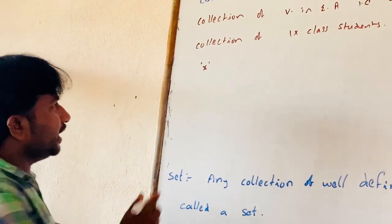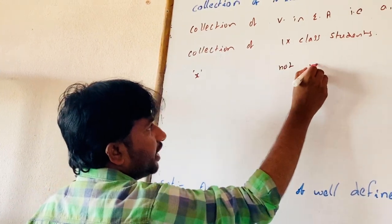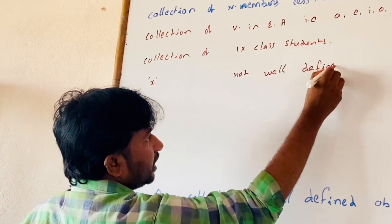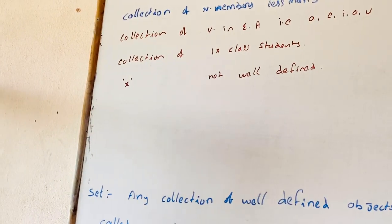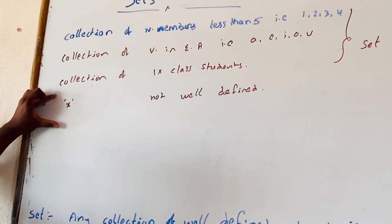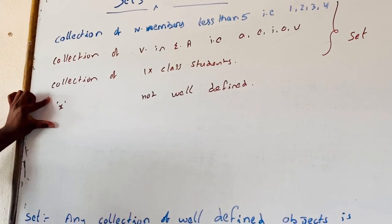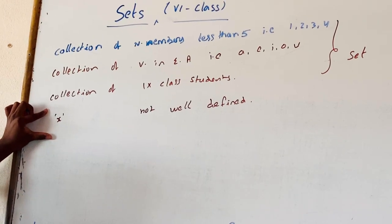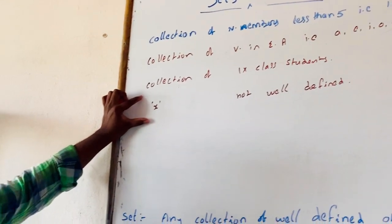It means it is not well defined. Since it is not well defined, the collection of intelligent students in a 9th class is not a set.